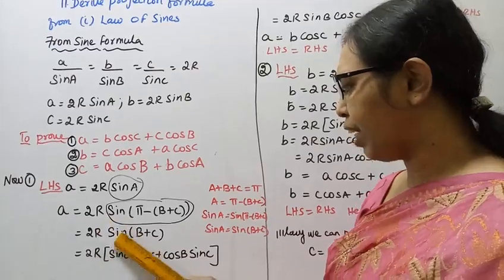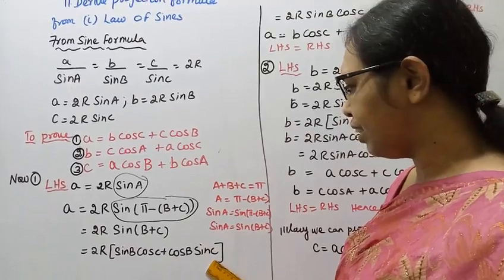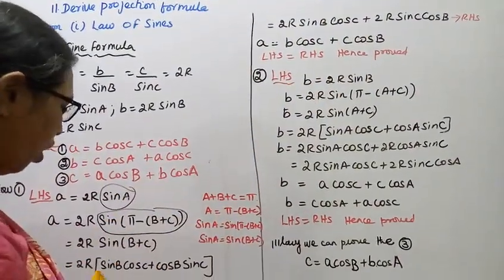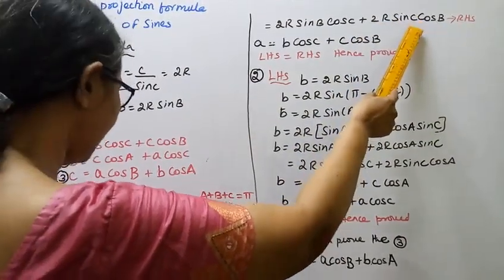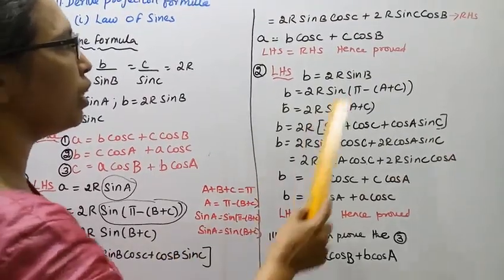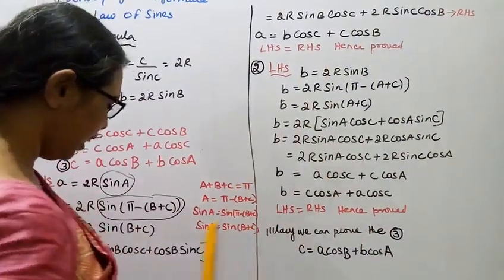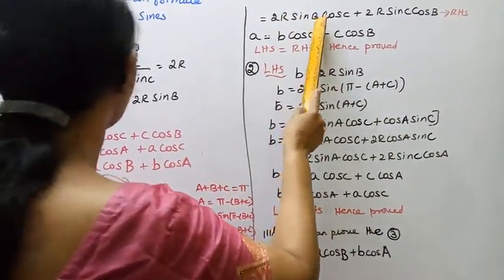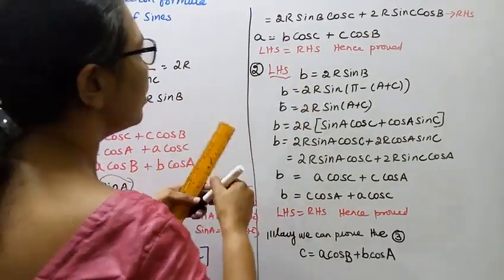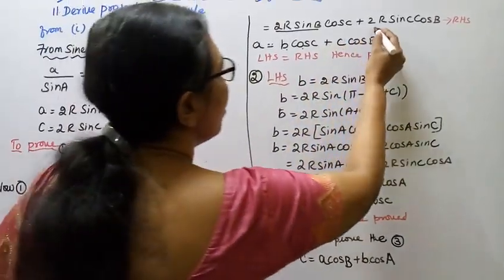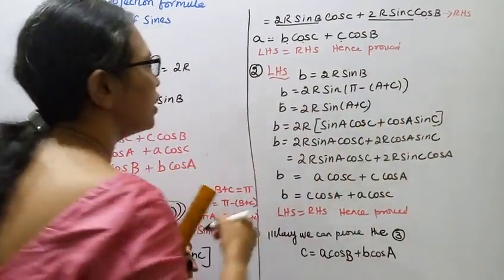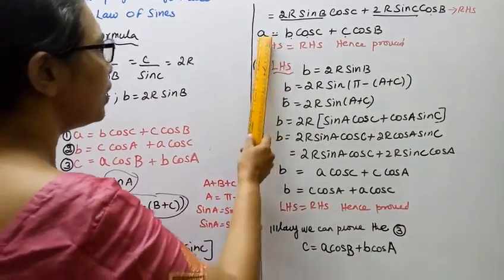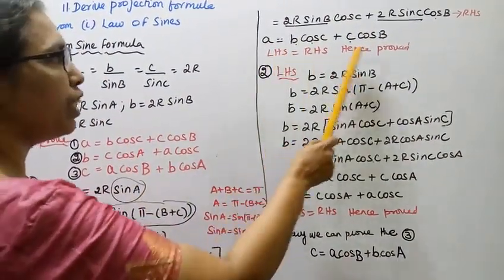Expanding sin(B + C) = sin B cos C + cos B sin C. So a = 2R(sin B cos C + cos B sin C). This gives a = 2R sin B cos C + 2R cos B sin C. Since b = 2R sin B and c = 2R sin C, we get a = b cos C + c cos B. Left hand side equals right hand side. First projection formula is proved.